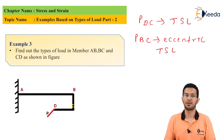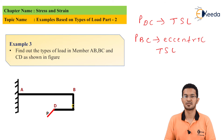For member AB, load P is normal to the surface but does not pass through the longitudinal axis. Hence, load P is eccentric transverse shear load.